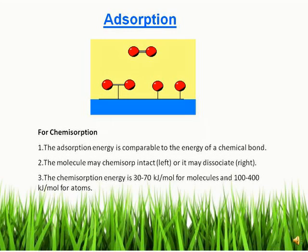This slide shows the chemisorption process. In chemisorption, one characteristic is that the adsorption energy is comparable to the energy of a chemical bond. Another characteristic is that the molecule may chemisorb intact — that is shown on the left side — or on the right side, the molecule dissociates and the atoms bond with the surface of the adsorbent. The chemisorption energy is 30 to 70 kilojoules per mole for molecules, and for atoms it is 100 to 400 kilojoules per mole.